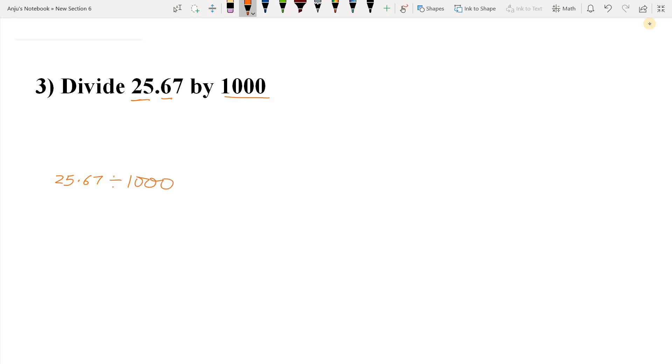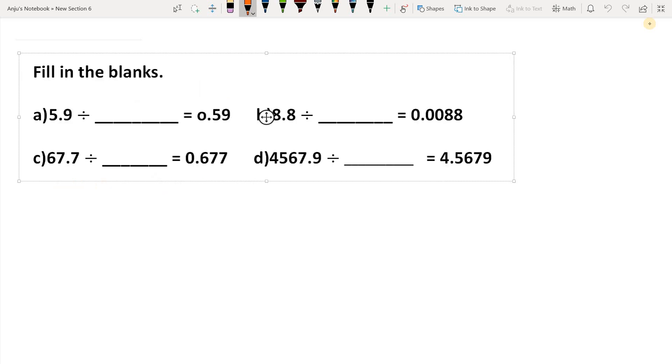25.67 divided by 1000. Students, but here we have only two digits: one, two. So we will add a zero before the 2, and then the decimal point will come before that. So our answer will be 0.02567. Here also in the whole number we have nothing, so we put zero.